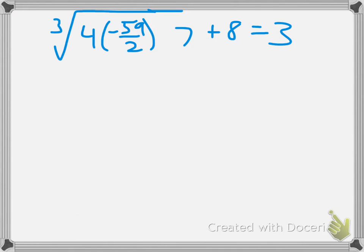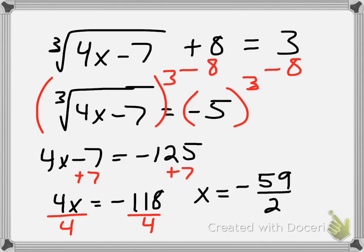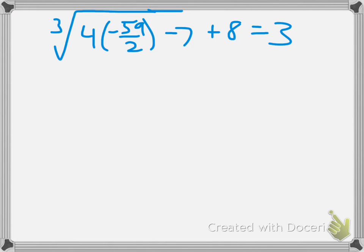That's why we want to check. So minus 7 inside the radical plus 8 equals 3. So I multiply 4 times negative 59 halves. Now with this, I can reduce.